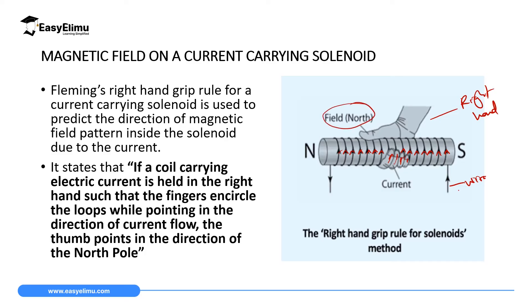If you insert a magnetic material inside this solenoid, it will get magnetized. The side where the thumb is pointing will assume the north pole, and the other side will assume the south pole. We can use Fleming's right-hand grip rule for a solenoid to predict the polarities of the magnet formed — especially electromagnets, which are temporary magnets we will study in the next few lessons.